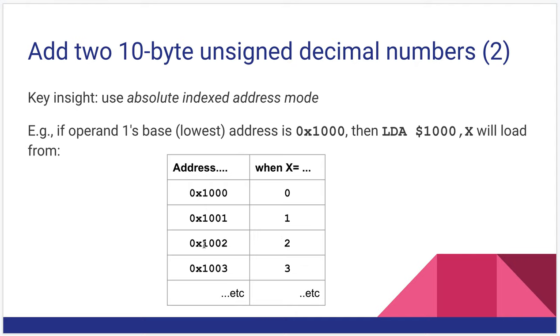So if you think about X as your loop variable or as your I from our for loops, that I will be added to this address to give us our current address. And this is actually how arrays work in languages like C and C++.